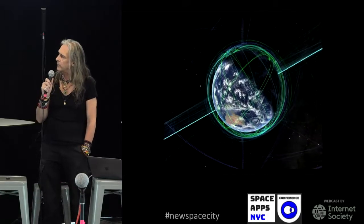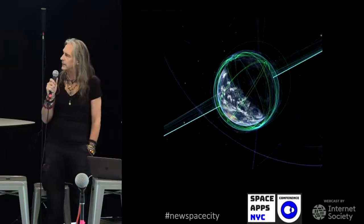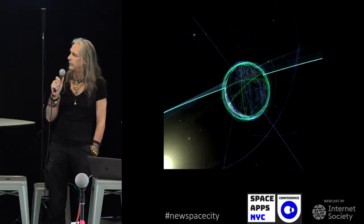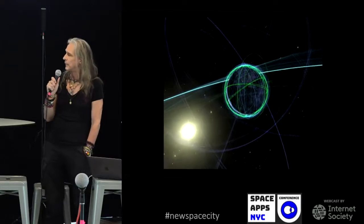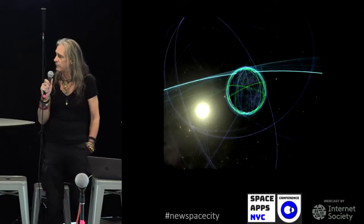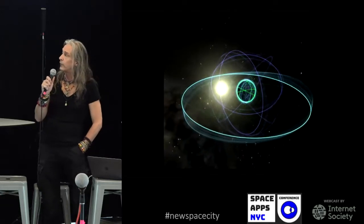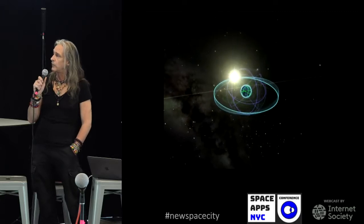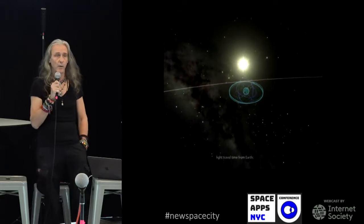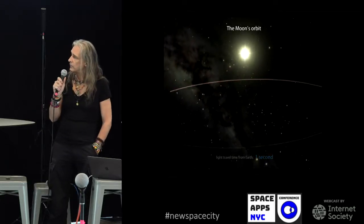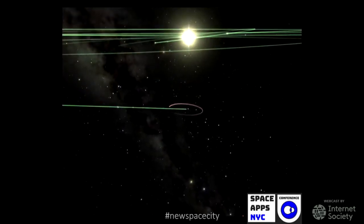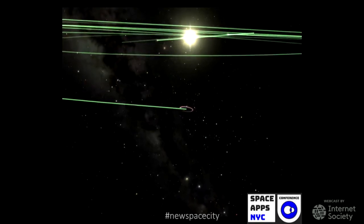Surrounding farther out, we have GPS satellites, and then farther out a line that resolves to the geosynchronous band — some 30,000 kilometers, about 22,000 miles, beyond Earth. At that altitude, over the equator, you rotate around the Earth in 24 hours, so as the Earth rotates, you're stationary. That's the Moon — just over a second in light travel time — and then the Sun, about eight minutes away.